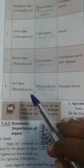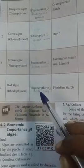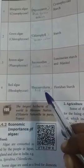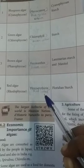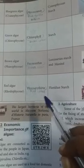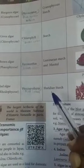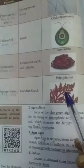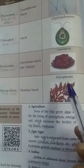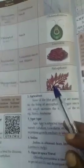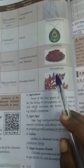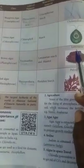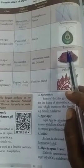Next is red algae, Rhodophyceae. The pigment is phycoerythrin, which gives a red color. The stored food material is floridian starch. An example of red algae is Polysiphonia.